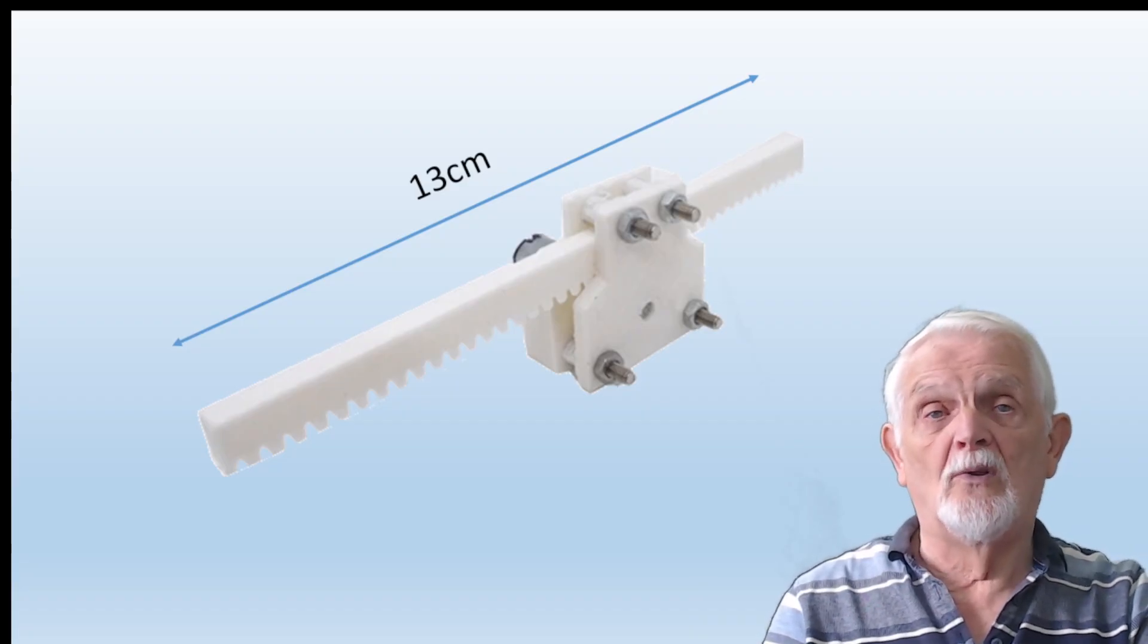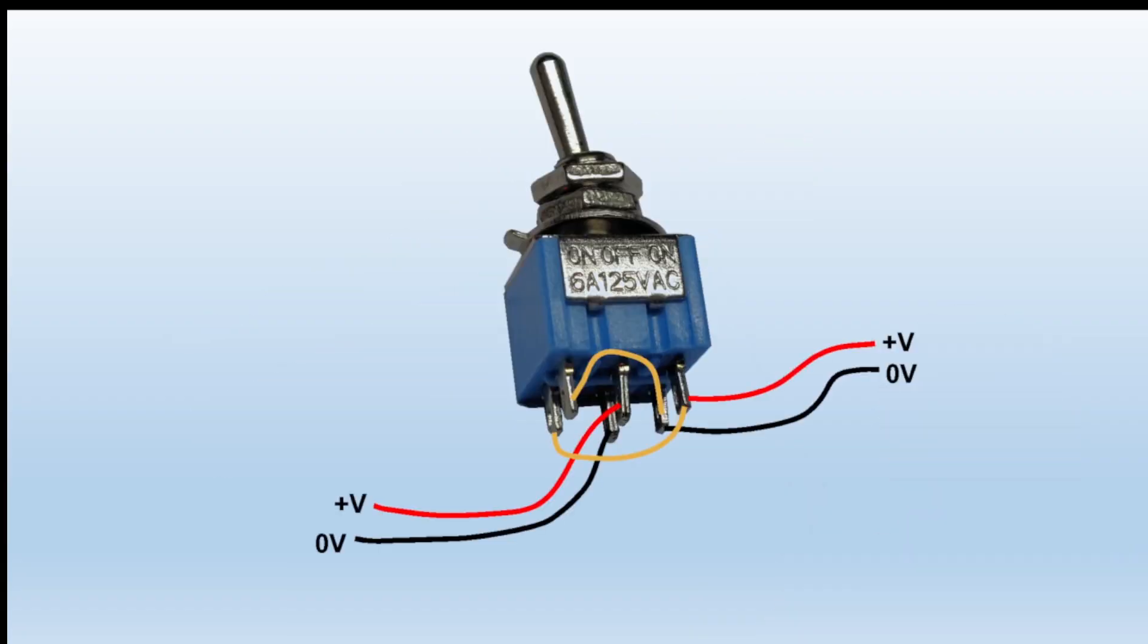How we control that? Well, normally we would use a double pole, double throw switch. So you have the voltage coming in and the voltage coming out, and the polarity of the output voltage depends on which way you've thrown the switch.